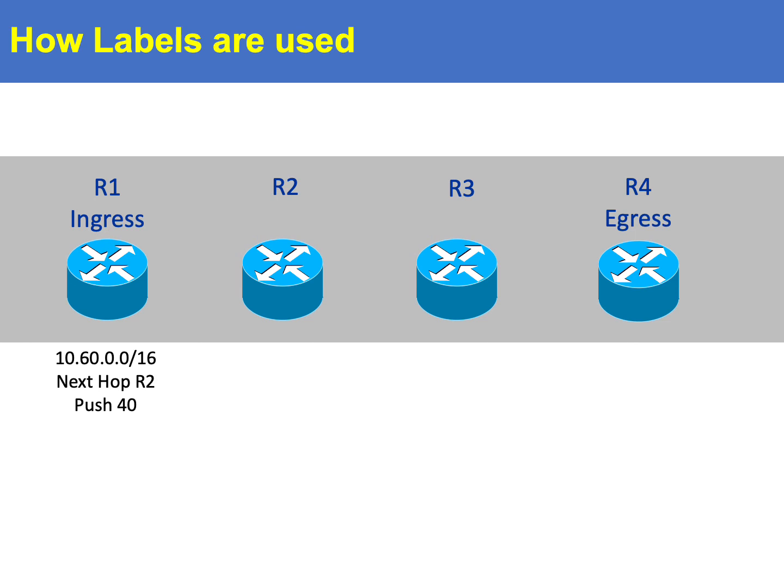The label travels to router 2 and is swapped for a new value of 45 and is directed to router 3.